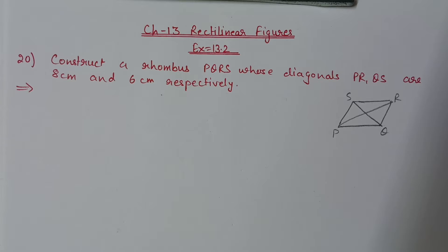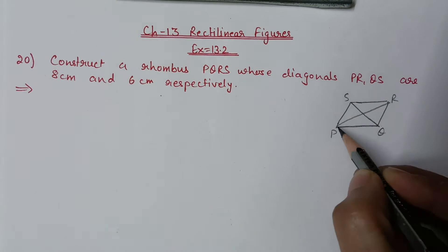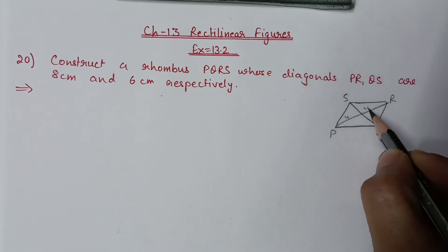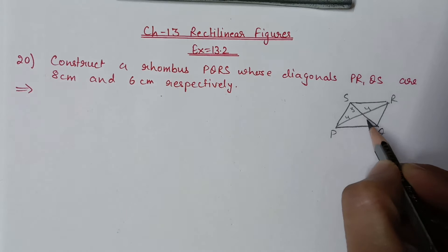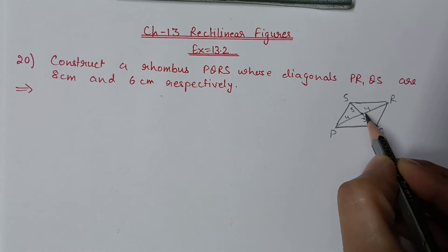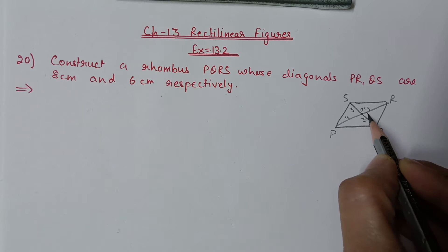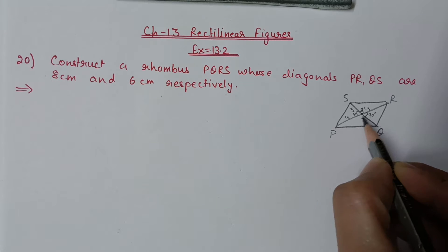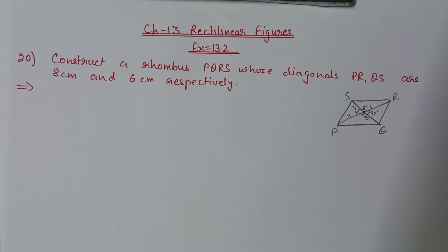The diagonals are 8 and 6. Diagonal of 8 centimeter will be divided in half — 4 centimeter each side. The other diagonal is 6 centimeter, so it will divide into 3 and 3. For a rhombus, diagonals bisect at 90 degrees, so all four angles at the intersection will be 90 degrees.